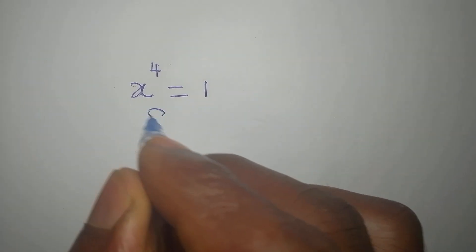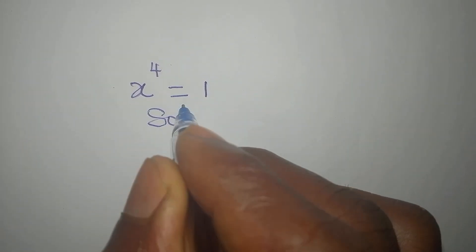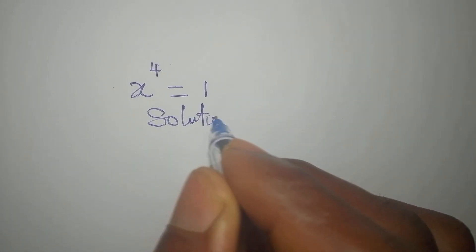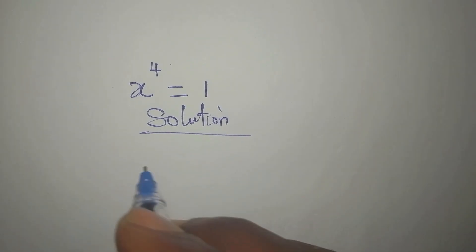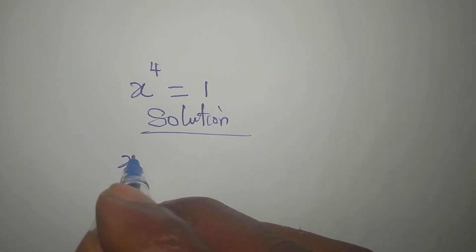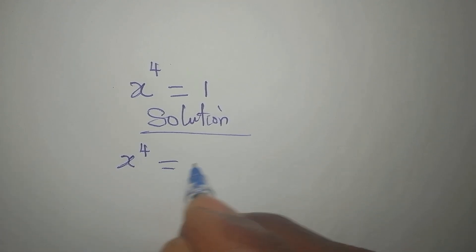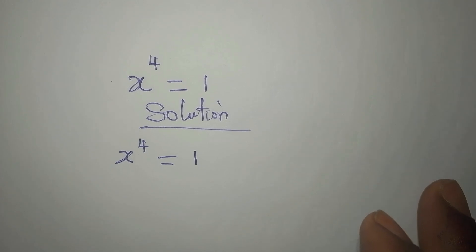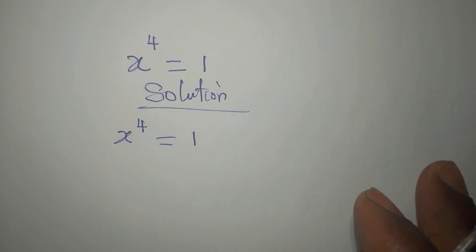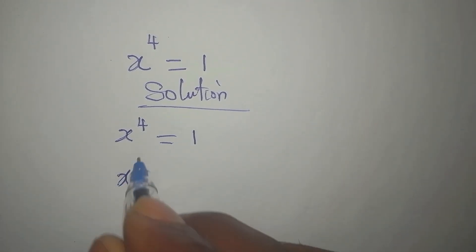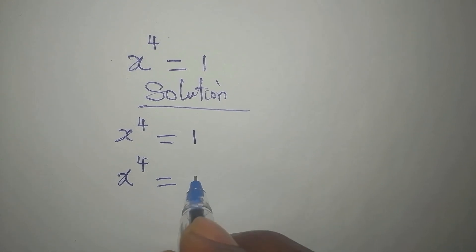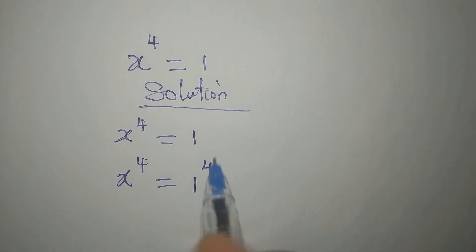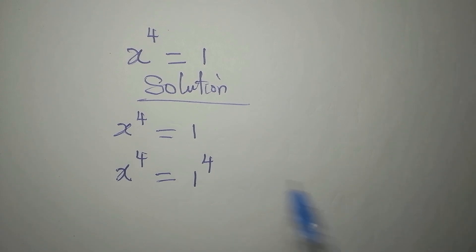Let's provide the complete solution to this problem: x to the power of 4 equals 1. We should solve this completely, so we have x to the power of 4 equals 1 to the power of 4. The powers are the same because 1 to the power of 4 is still 1.